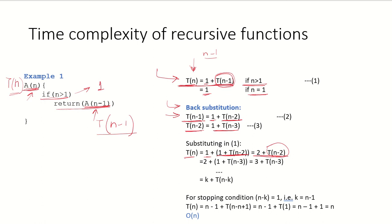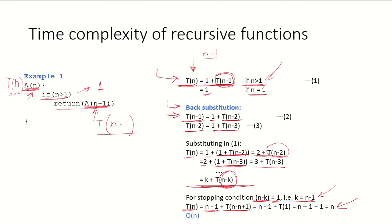Now substituting for T(n-2), we get 2 + 1 + T(n-3), which gives us 3 + T(n-3). If we generalize this, we get k + T(n-k), and this is where the algorithm would stop. For the stopping condition, n-k has to be equal to 1, since the algorithm runs as long as n is greater than 1. That means k = n-1. Substituting k, we get (n-1) + T(1) = (n-1) + 1 = n. So the time complexity is O(n).